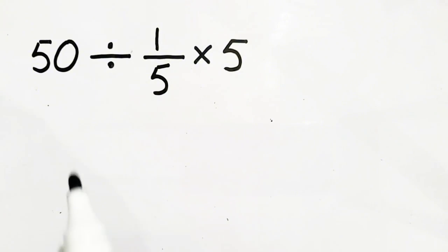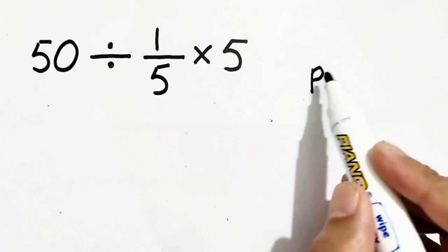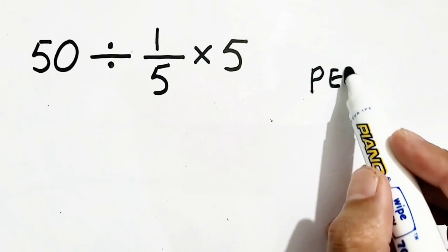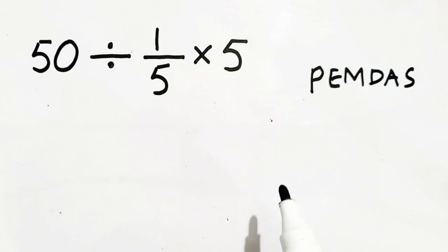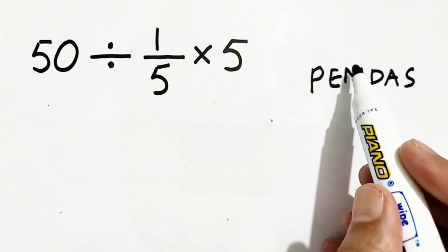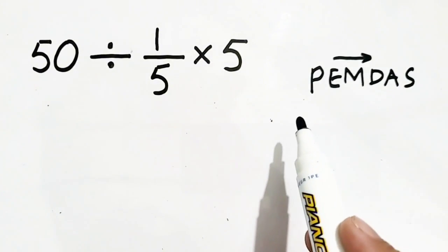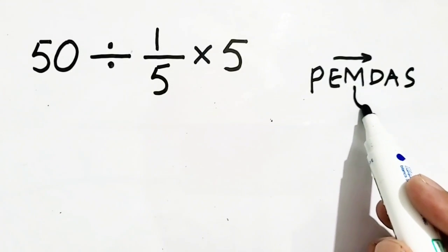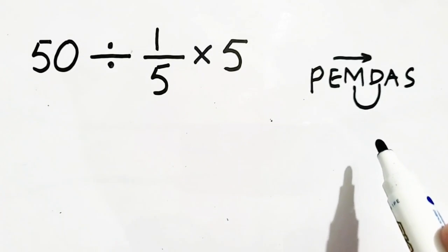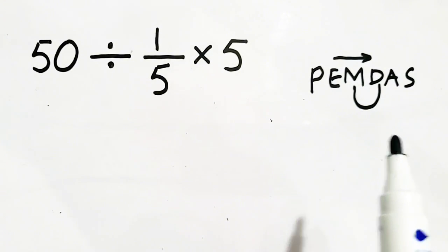It is a simple rule — the PEMDAS rule. PEMDAS rule says that first of all you have to move from left to right. The operations of multiplication and division have the same priority, but we will solve first the operation which is at the left.